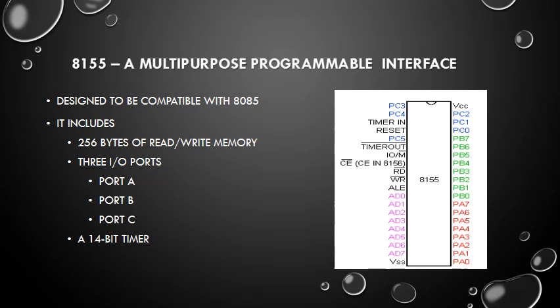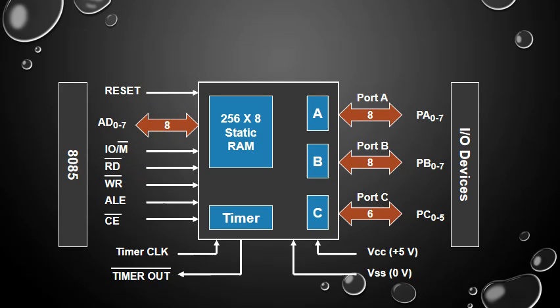Now the block diagram of 8155: the 8155 is a device with two sections. The first is 256 bytes of static memory, and the second is a programmable input/output. Functionally, these two sections can be viewed as two independent chips.